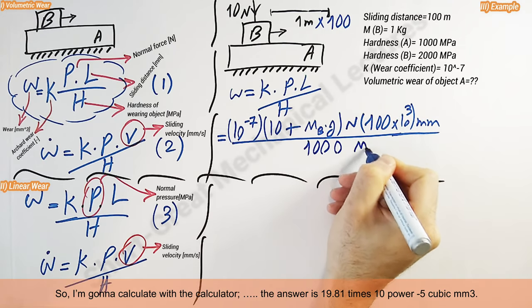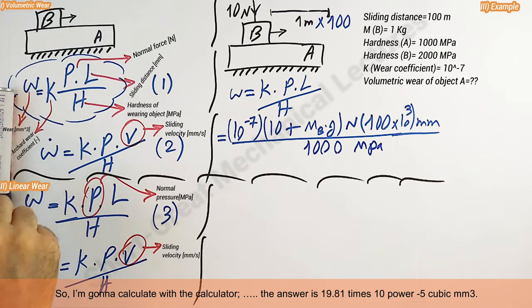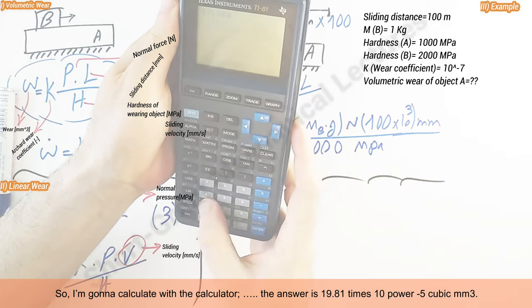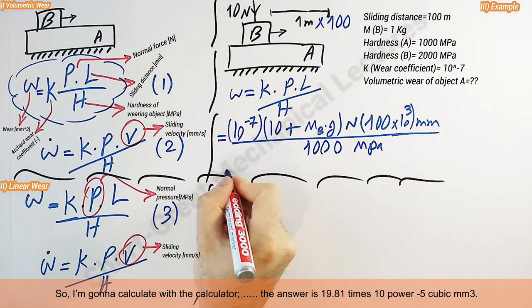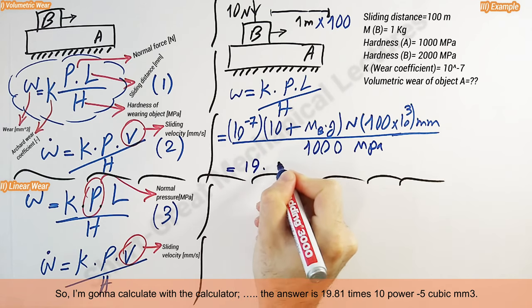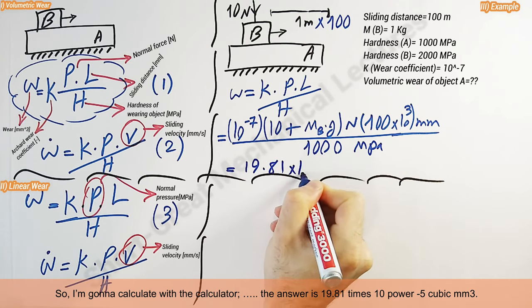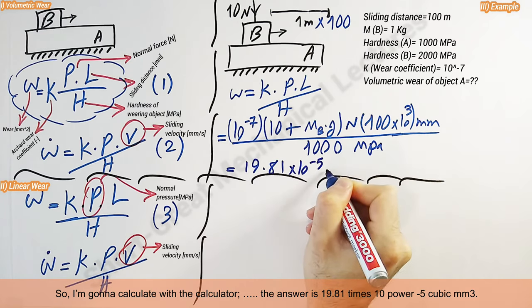So I'm going to calculate with the calculator. The answer is 19.81 times 10 power minus 5 cubic millimeter.